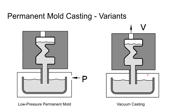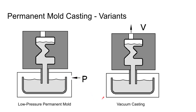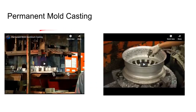Two other filling methods include a low-pressure system, where air pressure is pumped into the container holding liquid metal to fill the mold from the bottom — a popular approach — and vacuum casting, where vacuum draws molten metal into the mold. The tilt pour and low-pressure methods are both very common. These methods are generally suited for smaller castings.